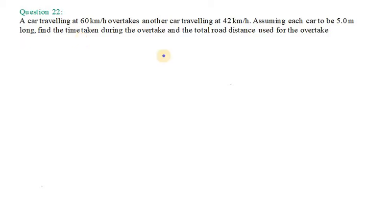It says a car traveling at 60 km per hour overtakes another car traveling at 42 km per hour. Assuming each car to be 5 meters long, so we have one car that is 5 meters long and another that is 5 meters long. Now we need to find the time taken during the overtake and total road distance used for the overtake.